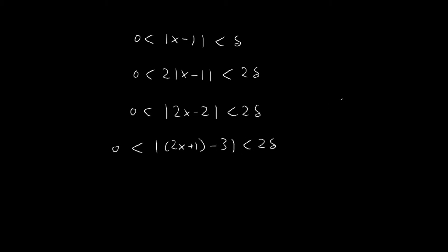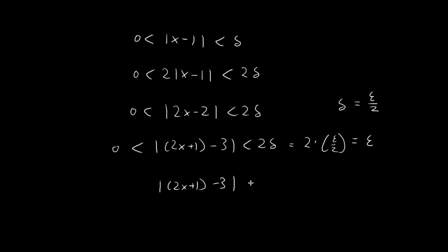Now I can choose delta to be equal to epsilon over 2. If I do that, then 2 times delta will just become 2 times epsilon over 2, which is just equal to epsilon. So this statement immediately implies that the absolute value of 2x plus 1 minus 3 is going to be smaller than epsilon. So essentially, we're done here.